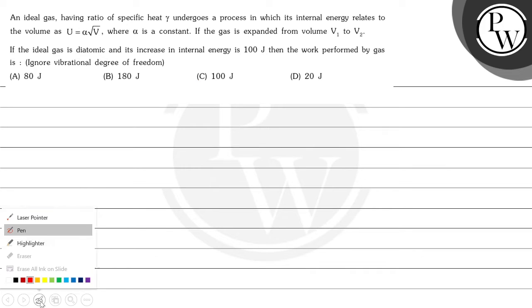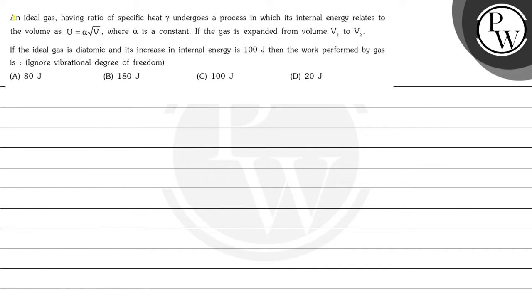Let's read this question. An ideal gas having ratio of specific heat gamma undergoes a process in which its internal energy relates to the volume as U equals alpha times the square root of V, where alpha is a constant. If the gas is expanded from volume V1 to V2, and if the ideal gas is diatomic and its increase in internal energy is 100 joules, then the work performed by the gas — ignore vibrational degree of freedom.